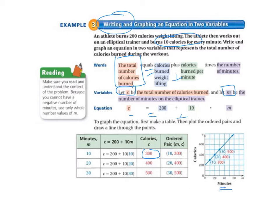So remember, time always goes on the x-axis, and whatever else you have goes on the y-axis. So we have (10, 300) for our first point. And then we plug in 20 for our second point. So if they worked out for 20 minutes, they would burn 400 calories. So our second ordered pair is (20, 400). So we graph that point. And our third pair is (30, 500). So we graph that third point. And then we connect the dots.